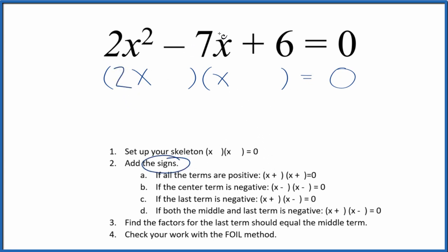Since we have a negative in the center here, if the center term is negative, we'll have a negative and a negative in our skeleton like this. At this point we're going to find the factors for the last term, the 6.